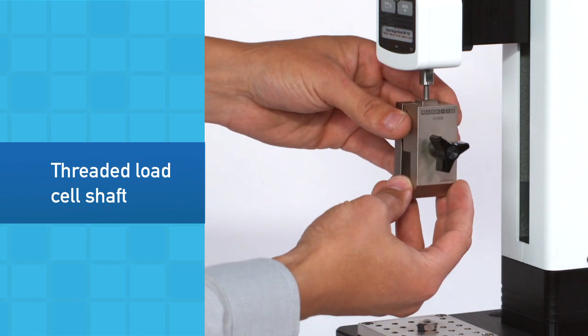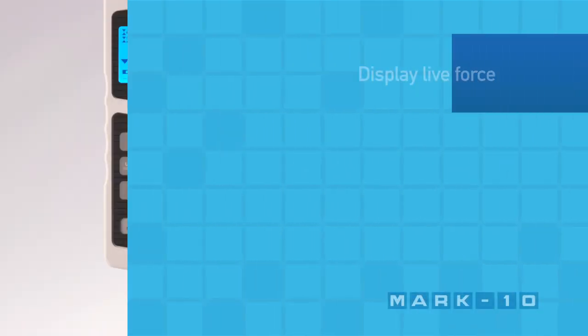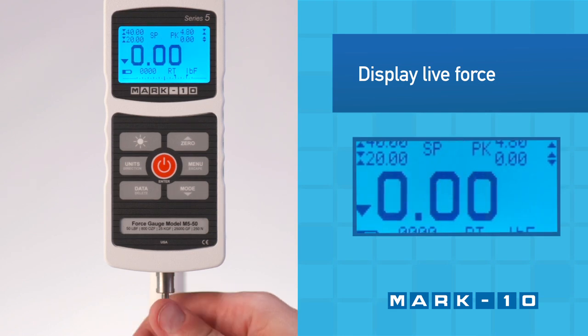The threaded load cell shaft is used to attach grips and attachments. Push and pull on the shaft to display the live compression or tension force in real-time mode.